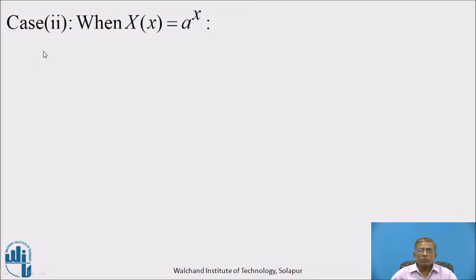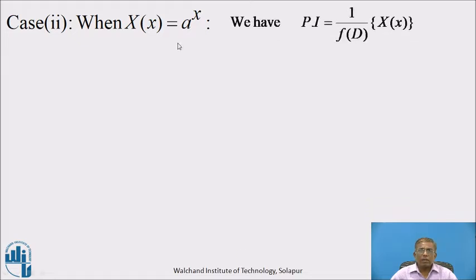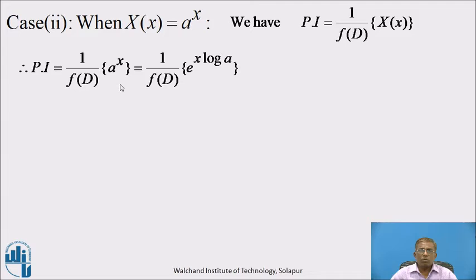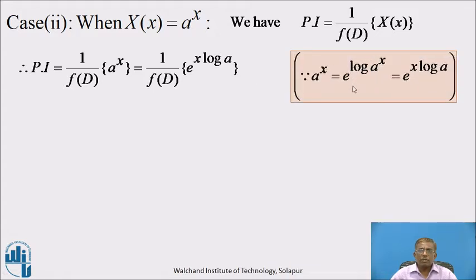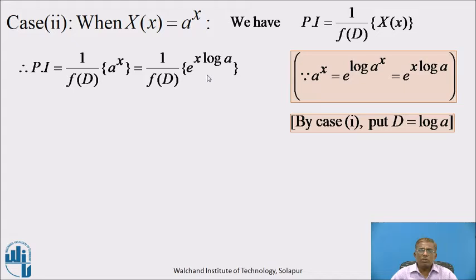Now let us start with Case 2. When the right-hand side function X(x) = a^x, then how to find the particular integral? We know PI = 1/f(D) operating on X(x). Therefore, PI = 1/f(D) operating on a^x, which we can write as 1/f(D) operating on e^(x·log a), because a^x = e^(log a^x) = e^(x·log a). Here, the coefficient of x is log a, which is a constant, so it belongs to Case 1.